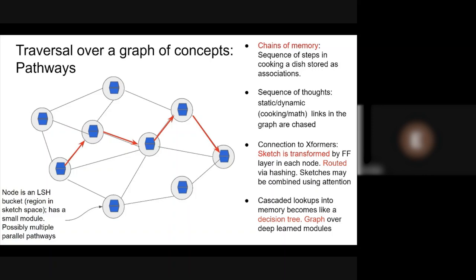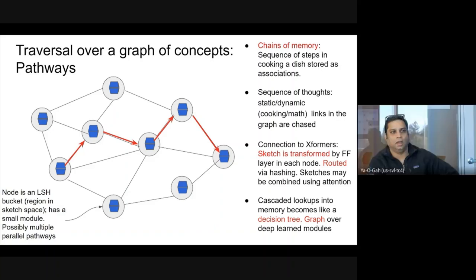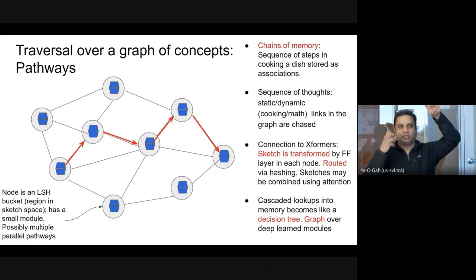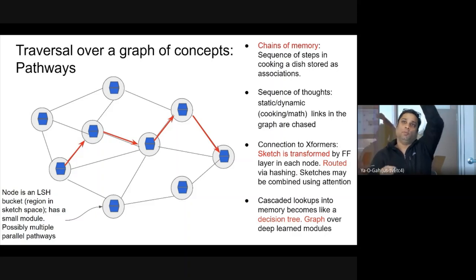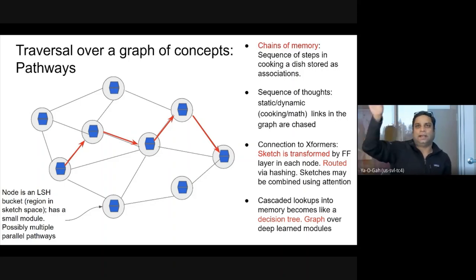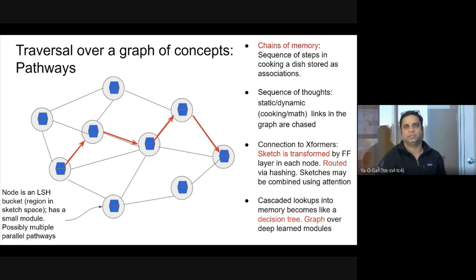The LSH buckets can be viewed as a graph where each node is a bucket corresponding to a concept, with a small module or program to run. As you're computing or thinking, you are traversing over this graph. A compound sketch always has one point in one cluster and one in another — say one in the person cluster and one in the speech topic cluster. Those two points co-occur, so those two buckets point to each other. If you're always talking about language understanding, the language understanding sketch bucket will point to your person sketch.